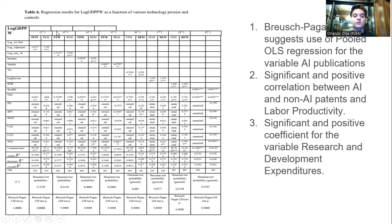Here you can also see the results for the fixed effects and random effects models. As we can see, the Breusch-Pagan test suggested the use of pooled OLS regression for the AI publications variable. And also, we found a significant and positive correlation between both AI and non-AI patents and labor productivity. And the variable research and development expenditures also showed a significant and statistically positive coefficient.